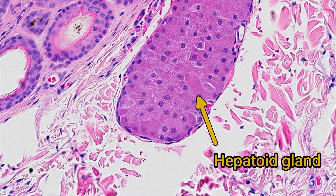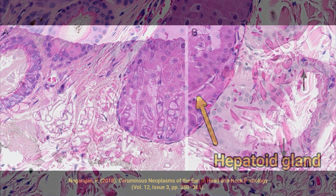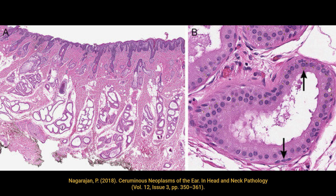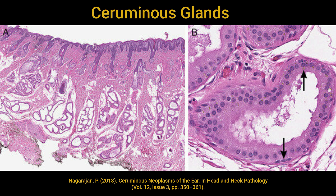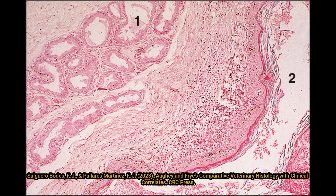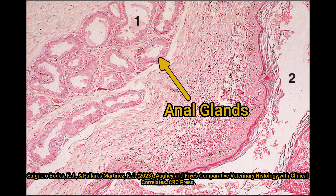Hepatoid glands are often more abundant in uncastrated male dogs. There are also a couple of modified apocrine glands in different anatomic locations. In the ear canal, ceruminous glands look very similar to apocrine glands but will produce cerumen, or earwax. Dogs also have modified apocrine glands around the anus known as the anal glands, which produce an oily secretion deposited onto feces as it passes, producing a unique odour that marks territory.